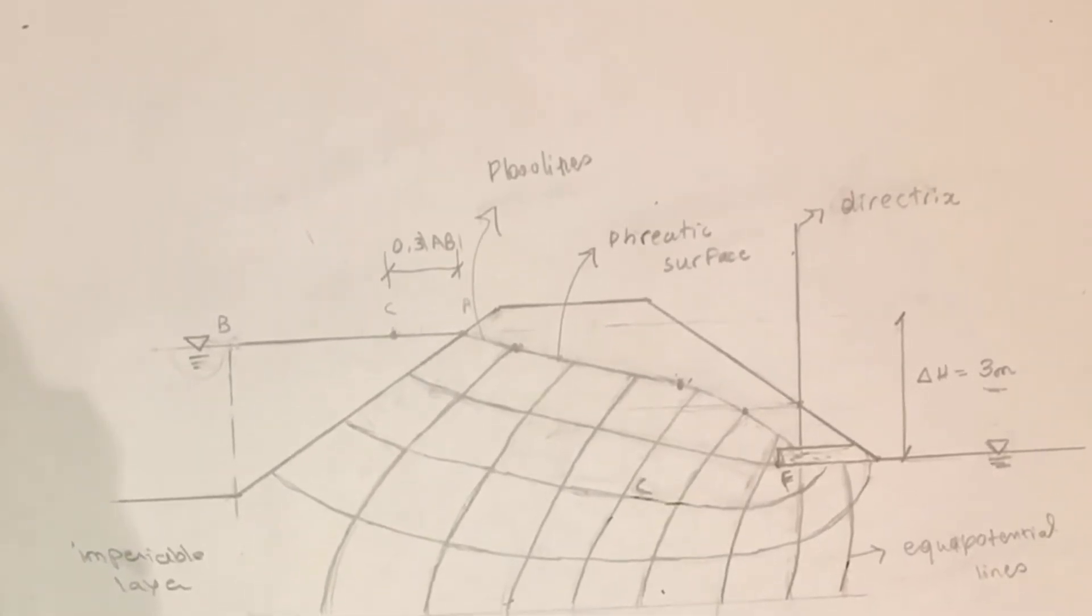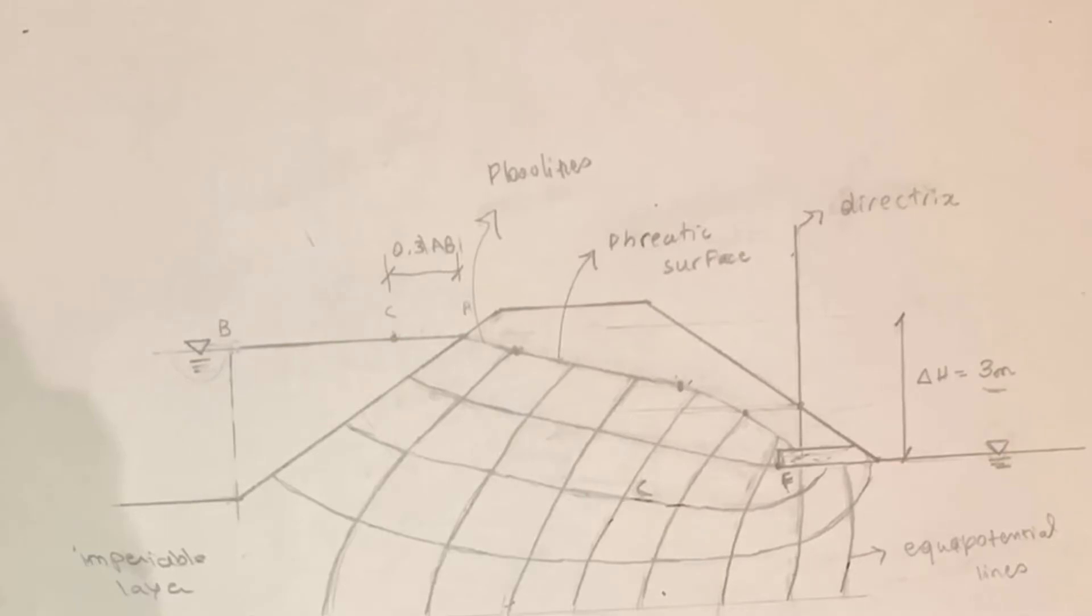Equal potential lines represent zones of equal pressure or head. And the main fundamentals of flow nets is that every intersection between a flow line and equal potential line must be at right angles to each other. Also we draw the flow net so we can form circular squares.